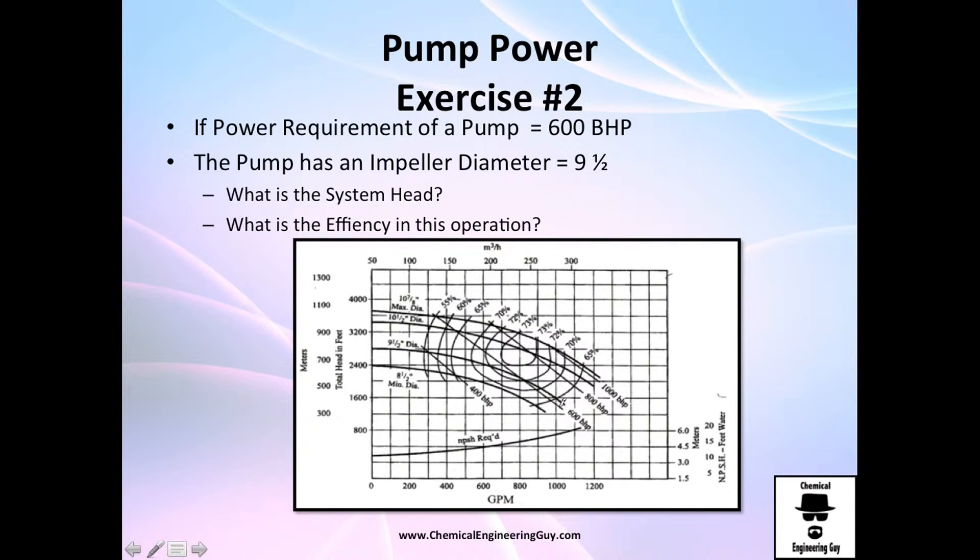Now, exercise number two. If the power requirement of my pump is 600 bhp, so we are in this line right here, the pump has an impeller diameter of 9.5. What is the system head and what is the efficiency in this operation? I actually wanted to use a 10.5 inch diameter. So it's right here, and the only point in which I cross is here. I only have one operation point, and it's right here. What is the system head? Let's go to the left. And I find this to be 3200 feet of system head. What is the efficiency in the operation? So it's between 60 and 64, a little bit more into 65. So I would say it's 64%.